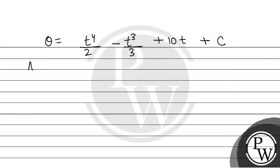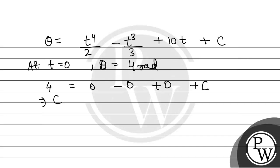We have been given that at t equal to 0, theta equals 4 radians. Substituting t equal to 0 into the expression for theta: 4 equals 0 minus 0 plus 0 plus C. So C equals 4. Therefore, the angular position theta equals t to the power 4 by 2 minus t cubed by 3 plus 10t plus 4.